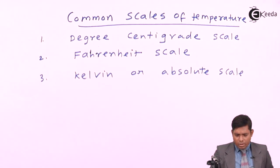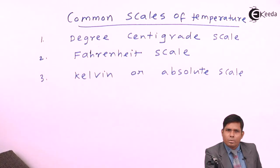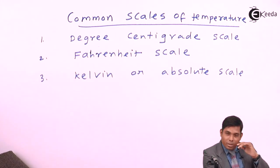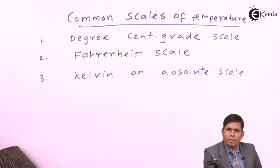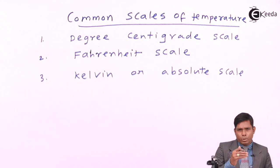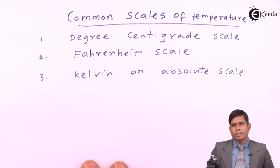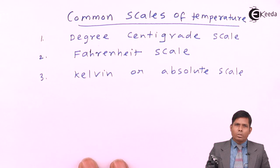Generally, for the degree centigrade scale, the lowest temperature that you can measure is defined by two fixed points used when making instruments like thermometers. The lowest point is called the ice point and the higher point is called the steam point. Between these two points — ice point and steam point — we grade the scale of the thermometer.